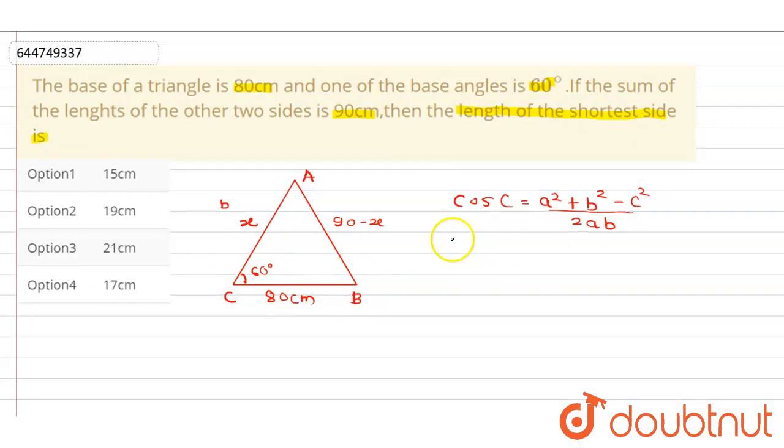Now in this particular case we have angle C = 60°, therefore cos C will be 1/2. This will be 1/2 = a² is 80 squared which is 6400, plus b² will be x², minus - now we need to take 90 - x squared, which is in brackets, 8100 + x² - 180x. This is what we get.